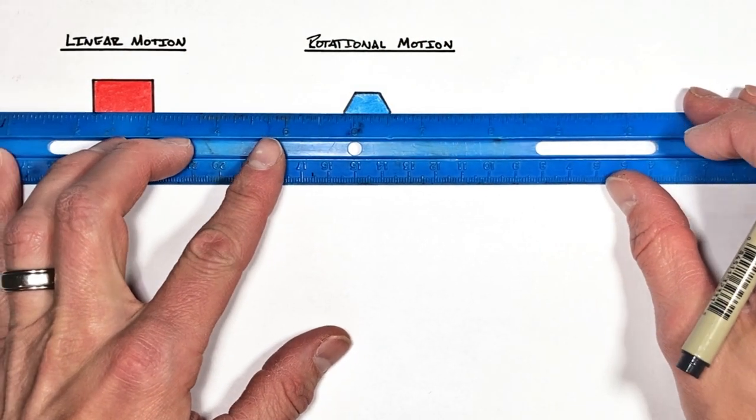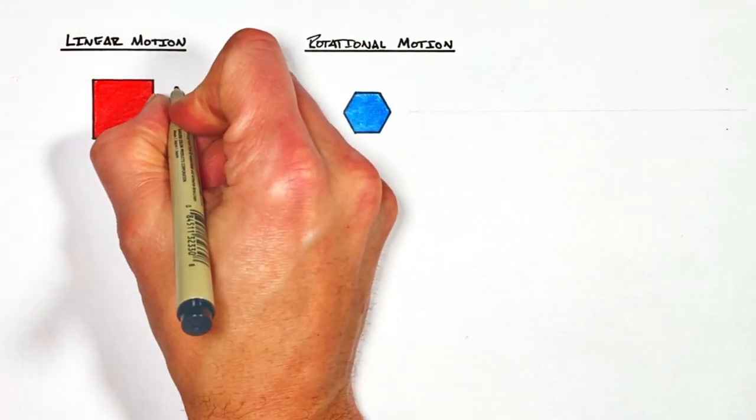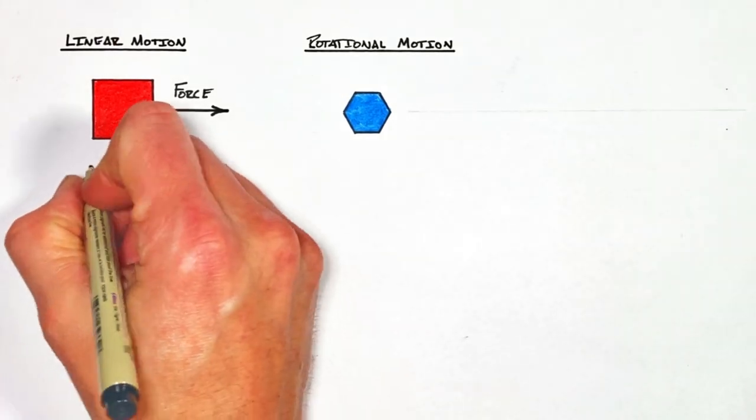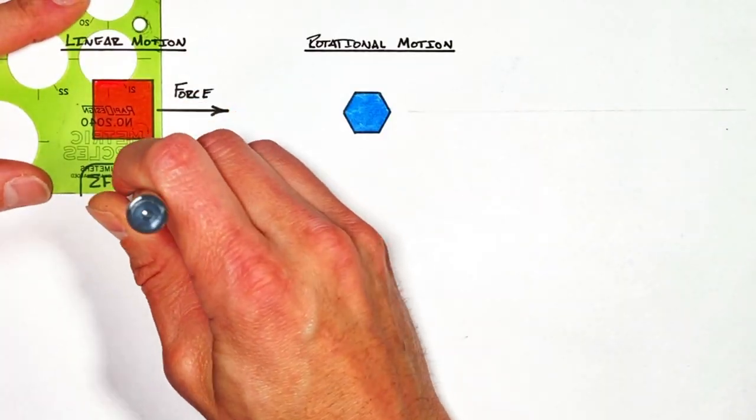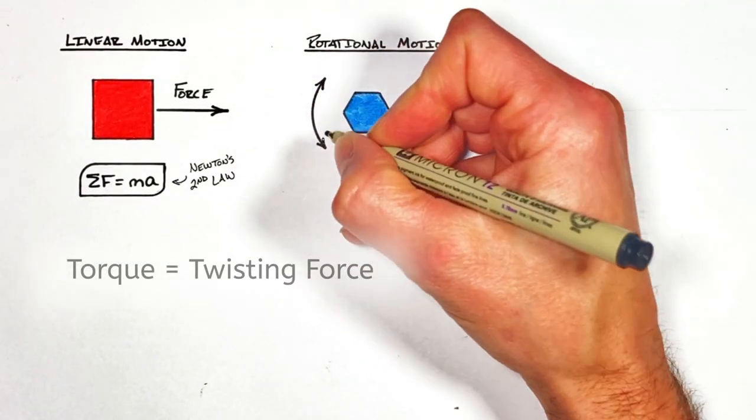In the past we've talked about how if you put a force on an object it's going to tend to move or really accelerate in that direction. That's just Newton's second law. And much in the same way if we put a torque on an object it's going to cause it not to move in a straight line, but to rotate.